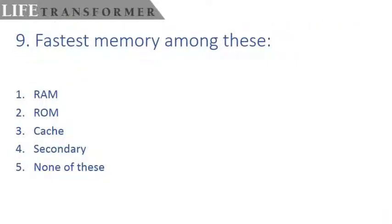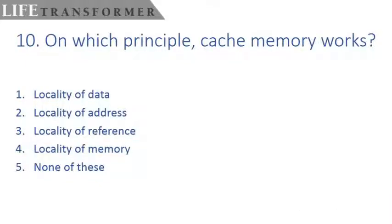Fastest memory among these. Which among the following is the fastest memory? Let's move to the answer. Cache memory. Cache memory is the fastest memory.